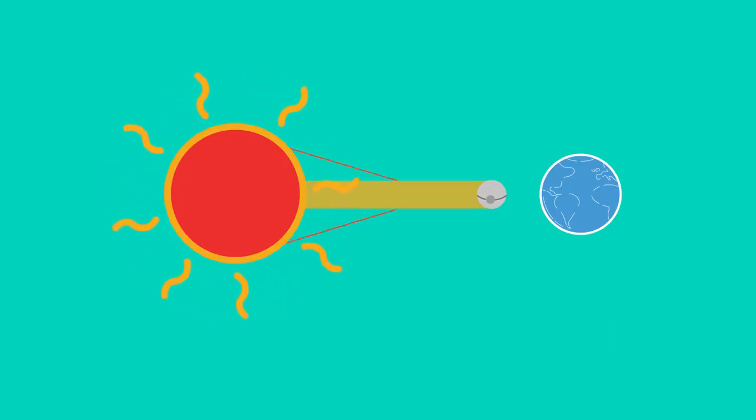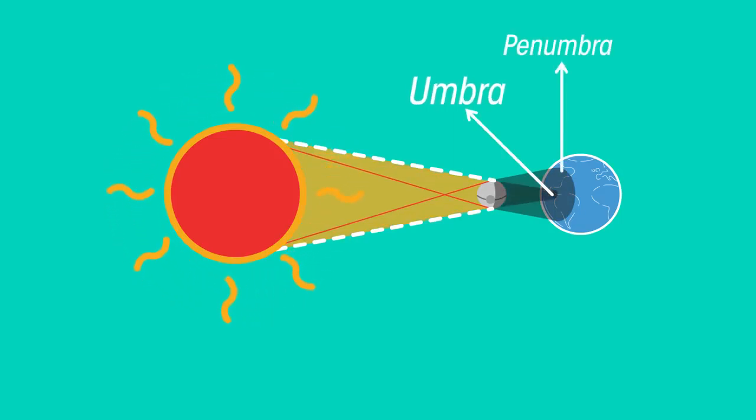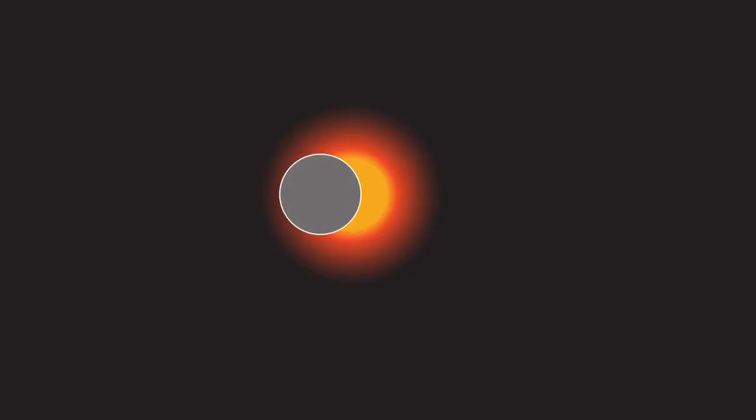As always, the shadow has an umbra and penumbra region. If you're standing in the umbra—the part of the earth where the sun's light is totally blocked from reaching you—the sun will look like this in the sky.